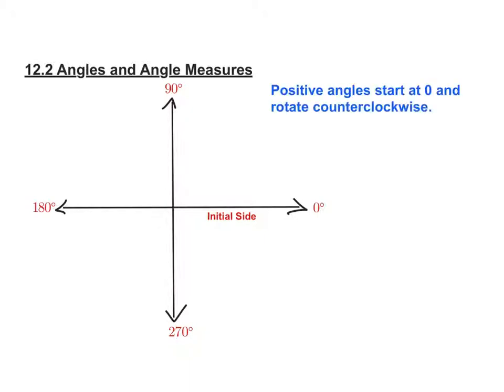So the next thing we need to know is that positive angles always start at 0, and they rotate counterclockwise, so they go this way. They rotate in a counterclockwise fashion. And the way you think about it is that if you know our quadrants 1, 2, 3, 4, they kind of rotate in that counterclockwise fashion.